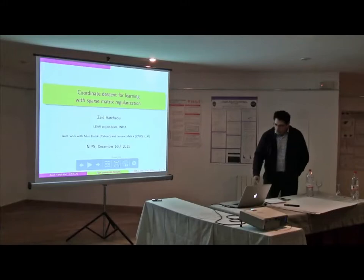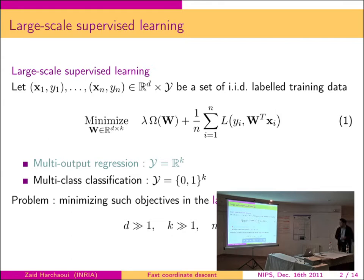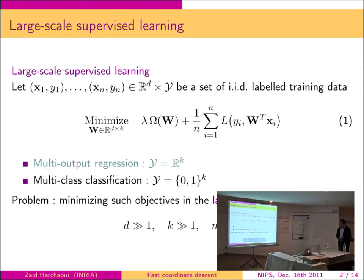We're looking at large-scale supervised learning problems. We have a set of labeled training data, and we're trying to solve jointly K-tasks or K-problems by looking for a W-matrix, a rectangular matrix, so that it minimizes a penalized empirical risk minimization objective. On the one hand, we have the lambda of W, which is the regularization penalty, and then the empirical risk.